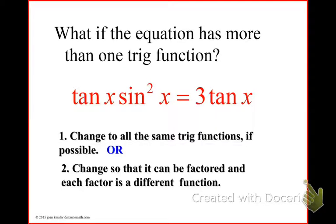So in this case, the tangent x times sine squared x equals 3 tangent x. I have a sine squared x — could I change that? What would sine squared x change into? That would change into 1 minus cosine squared x. Would that help me? No, that would probably make it worse.